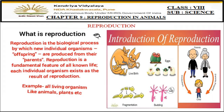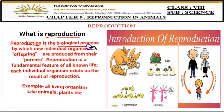Let's get started with the first topic: reproduction. The name 're' means again and 'production' means producing. So producing again the similar types of individuals is known as reproduction. It is the biological process by which new individual organisms, or offspring, are produced from their parents. It is the process in which parents produce similar new individuals.